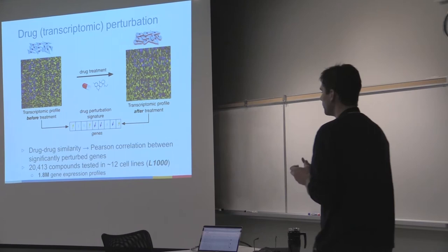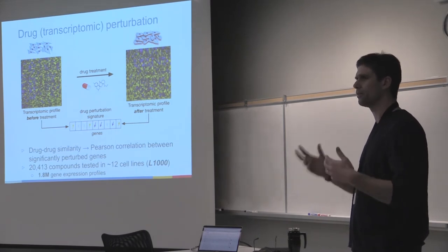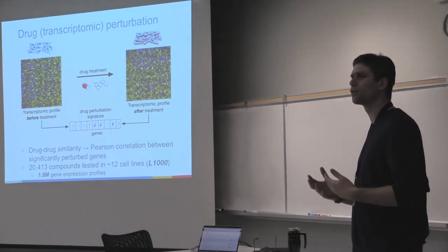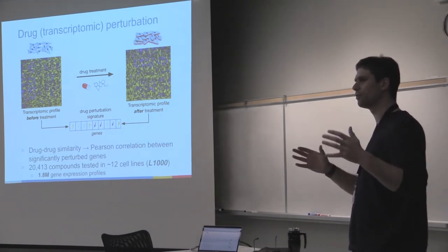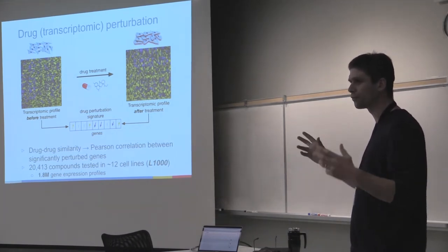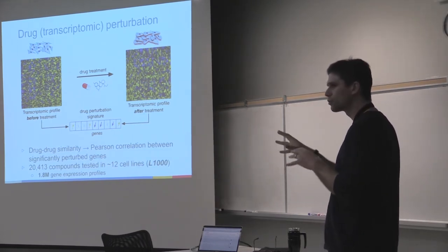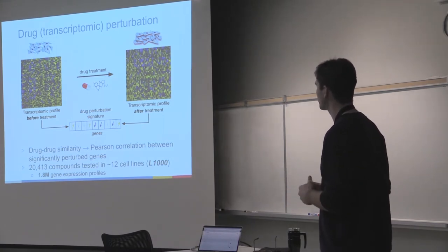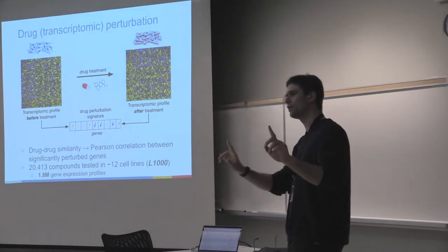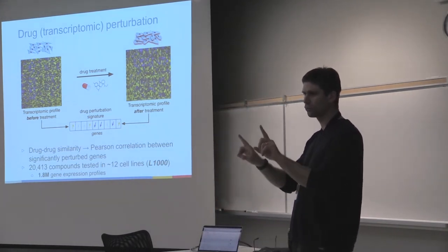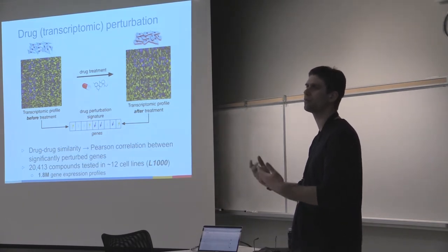What we've done is compute those signatures using simple differential gene expression. The tricky part is that there are almost 4,000 batches in the data — we're talking about 1.8 million experiments with 4,000 batches. Batch effect is a huge problem, so you have to control for that. We build gene expression drug perturbation signatures — one signature per drug — and when you compare two drugs' perturbation signatures, you understand whether they perturb the same genes the same way.